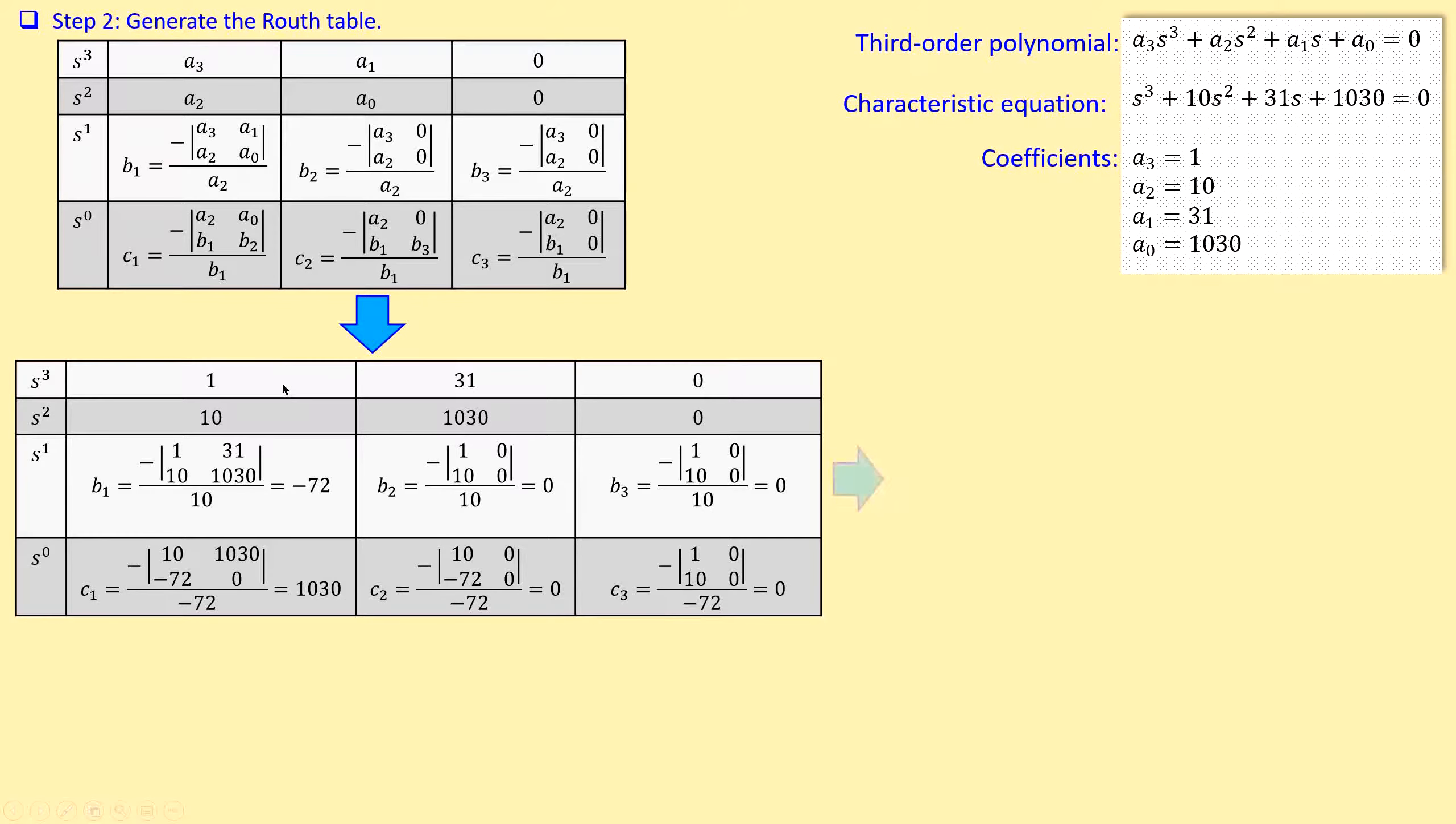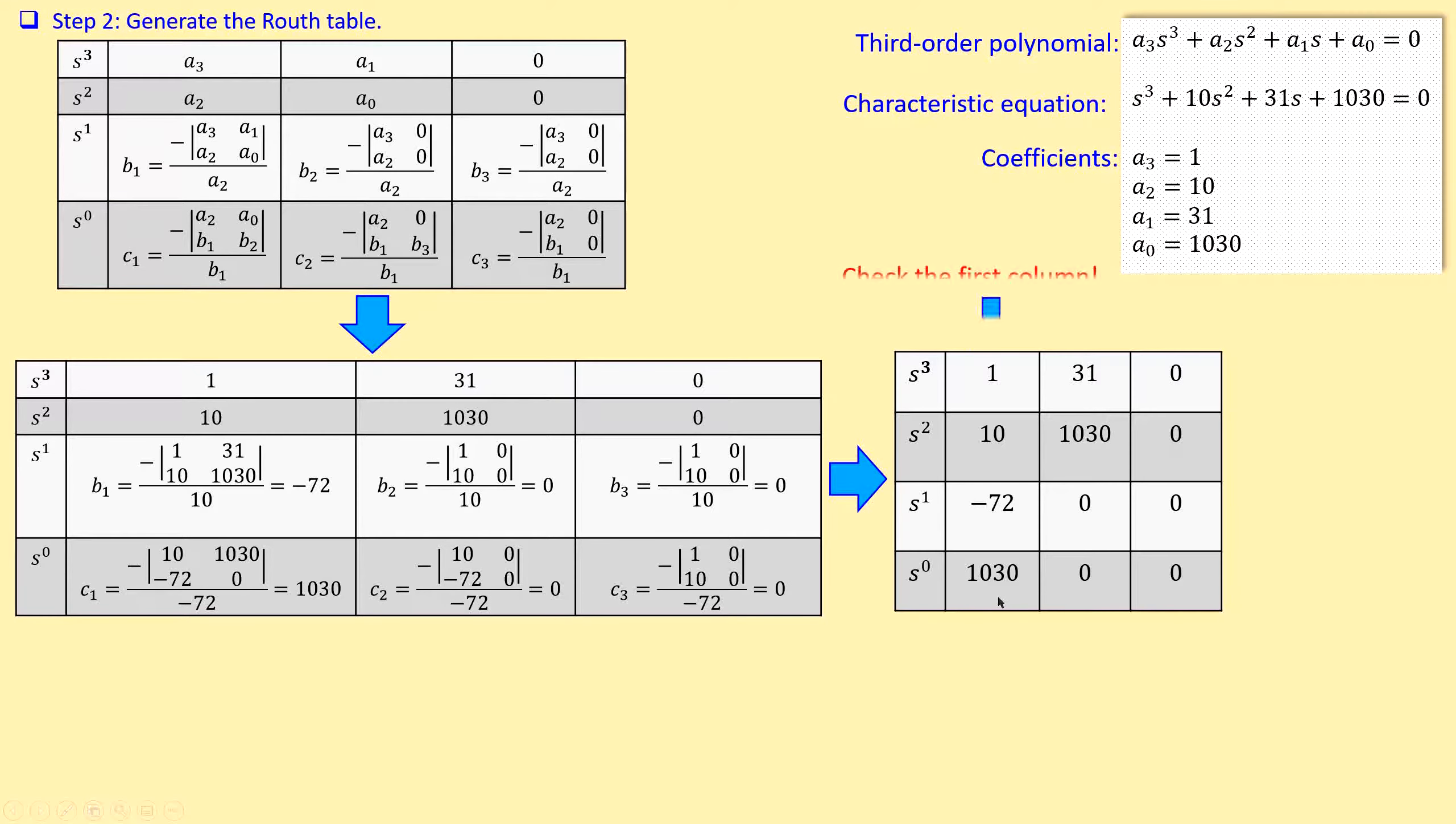If I now just make a simplification, just collecting the values in a simplified form, I have now this first column. We need to check this, check the first column for our stability. What we see is the following: we have a sign change here, first sign change, and we have another sign change, second sign change in here.